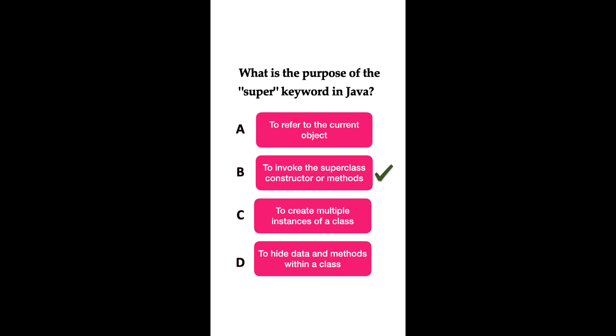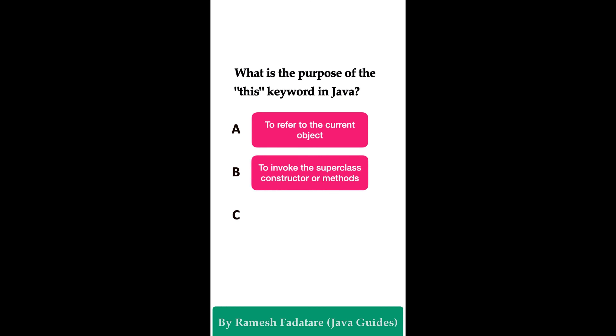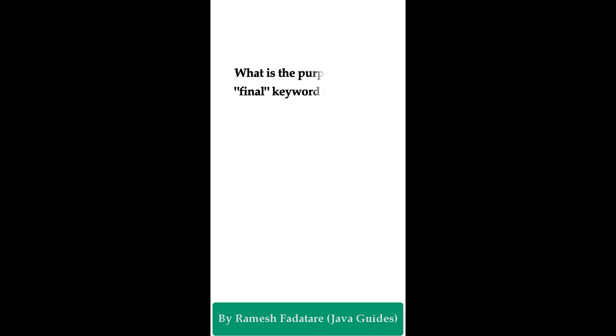What is the purpose of the this keyword in Java? Option A: to refer to the current object. The correct answer is option A. The this keyword refers to the current object within an instance method or constructor. It is used to distinguish between instance variables and method parameters. What is the purpose of the final keyword in Java? Option A: to prevent inheritance of a class. Option B: to prevent overriding of a method. Option C: to prevent modification of a variable's value. Option D: all of the above. The correct answer is all of the above.